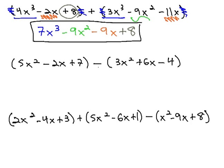This next problem, however, we are subtracting two polynomials. We're subtracting 5x² minus 2x plus 7 and 3x² plus 6x minus 4.